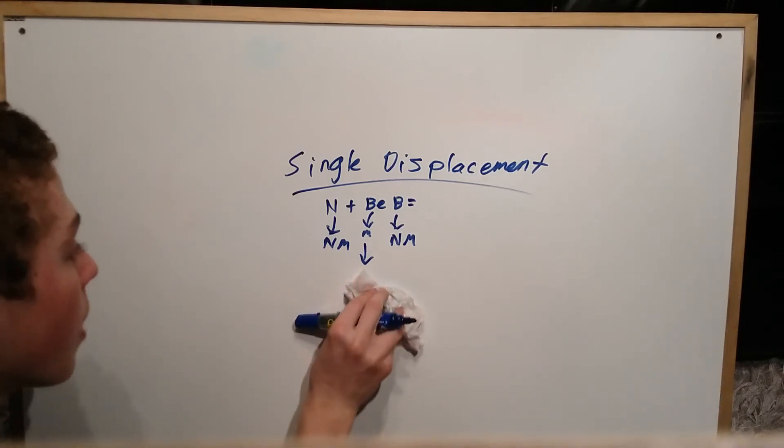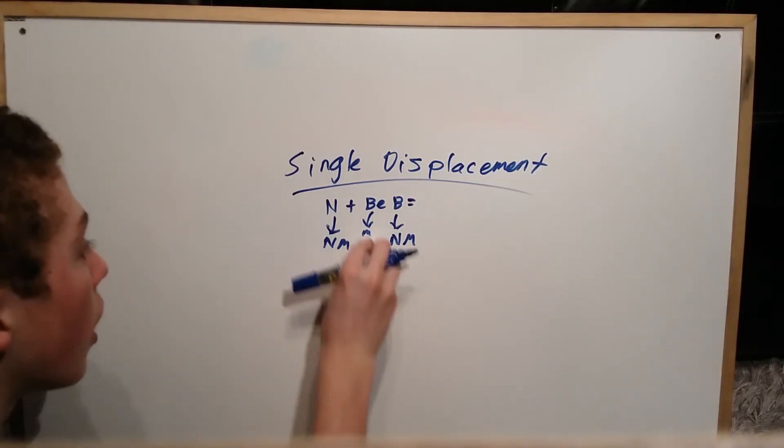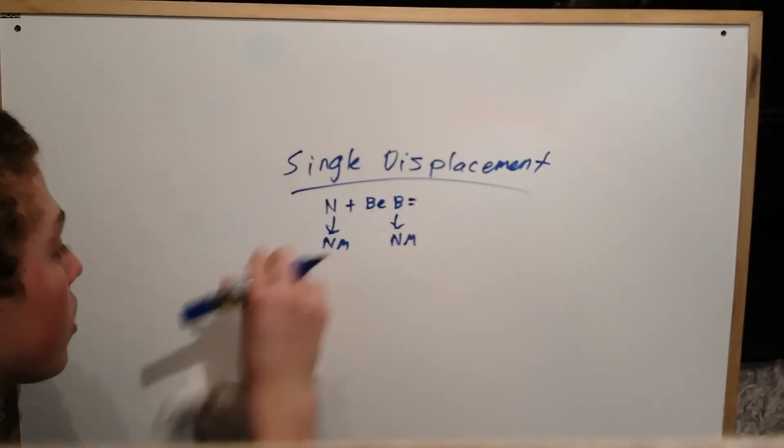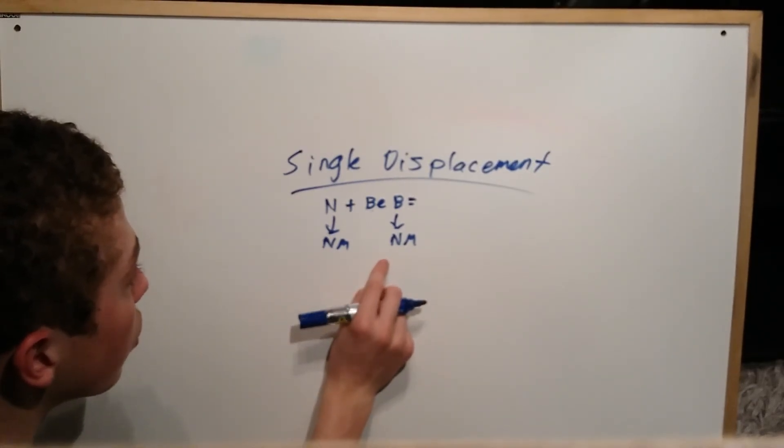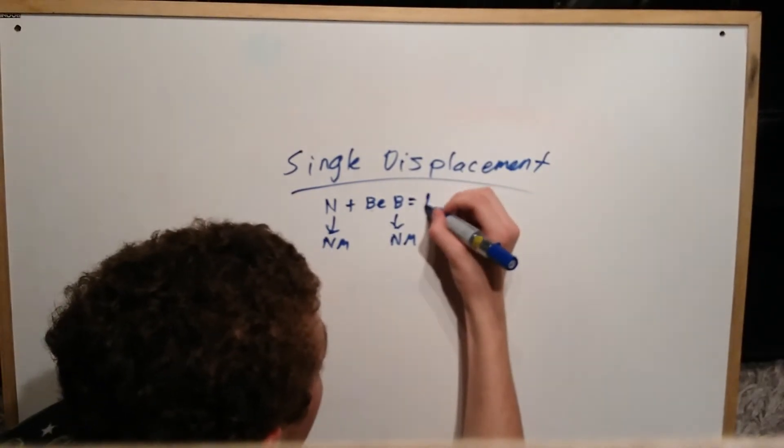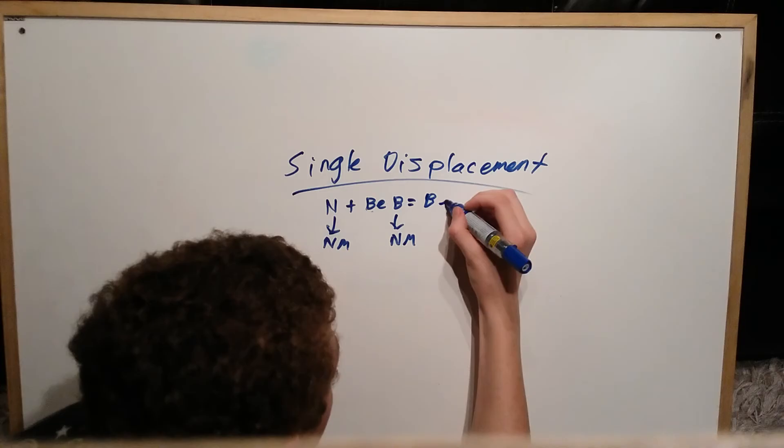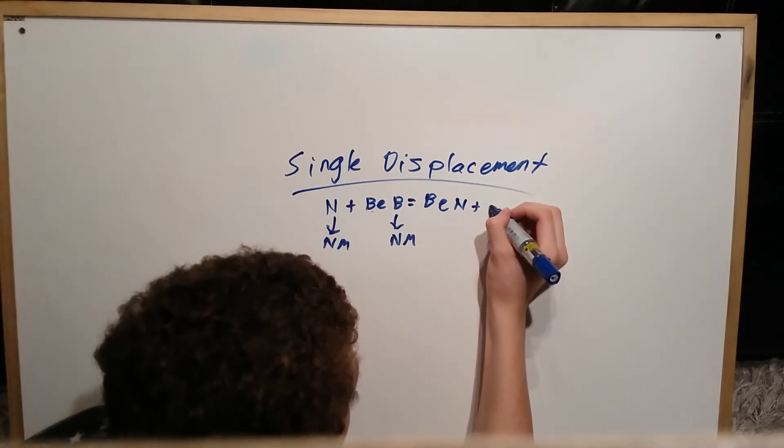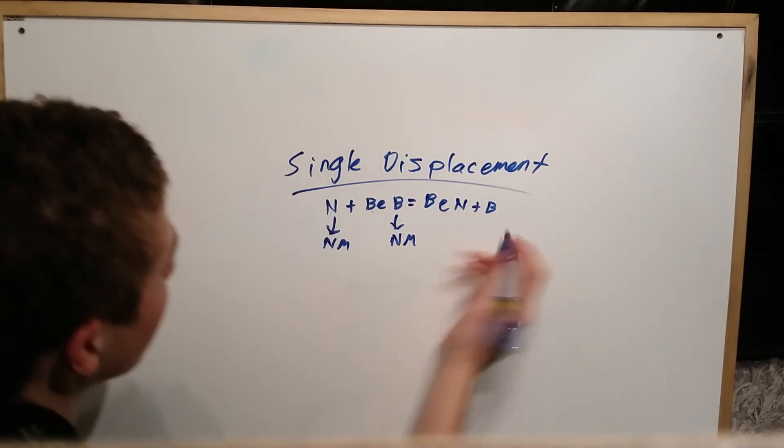So the ones that are the same kind of element, or in this case non-metals, they're going to switch. So across you're going to see BEN plus B and B is by itself.